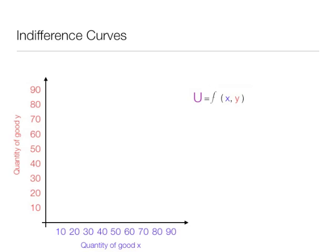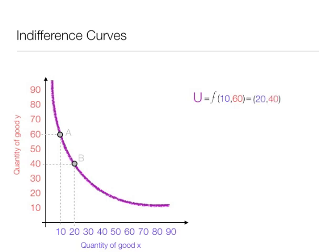The indifference curve is the purple line there. It's downward sloping. Point A is utility at point A, consuming 10x and 60y. At point B, utility is 20x and 40y, but it's equal to utility at point A. Point C, utility is 40x and 20y, and again is equal to the previous utilities of point A and B and C.